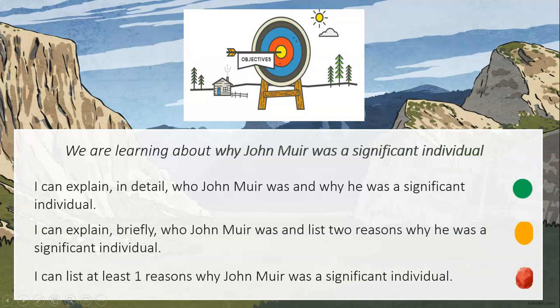Today we are learning about why John Muir was a significant individual. There are three levels you can aim for. The green level: I can explain in detail who John Muir was and why he was a significant individual. The yellow level: I can explain briefly who John Muir was and list two reasons why he was a significant individual. The red level: I can list at least one reason why John Muir was a significant individual. Pick one and write it down — that's your target for today.